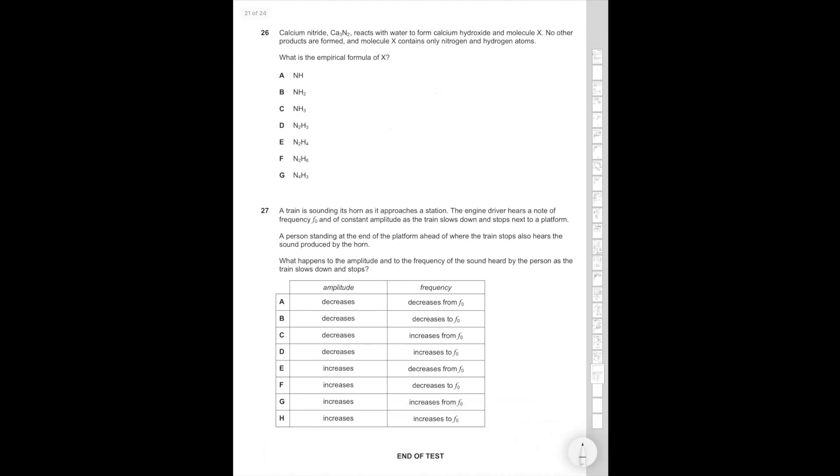Question 26. Calcium nitrate Ca3N2 reacts with water to form calcium hydroxide and molecule X. No other products are formed. And molecule X contains only nitrogen and hydrogen atoms. What is the empirical formula of X? Ca3N2, Ca2+ times 3, which is equal to 6+. 6 over 2 is equal to 3. And 3 minuses are ion. So therefore, if you have a compound with H and N, H has a positive charge of plus 1. Therefore, the basic empirical formula is going to be NH3, which is answer option C. Basically, how many hydrogens do you need to balance the charge of the 3 minus nitrogen ion? And that's how you do this question. Relatively simple. And remember, it's empirical formula. So you just want the basic atom to atom ratio.